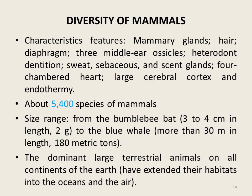More than 5,400 species of mammals have been identified, ranging in size from the bumblebee bat — the smallest known mammal at just a few centimeters in length — to the blue whale, which is more than 30 meters in length. Mammals are the dominant large terrestrial animals on all continents of the earth, and some have extended their habitats into the oceans and air.